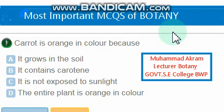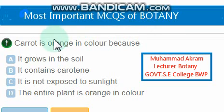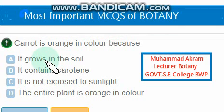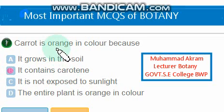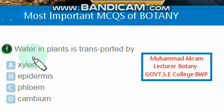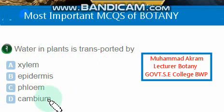Our first question: carrot is orange in color because it contains carotene. Yes, this is the right option. Carotene is present in carrot, which gives orange color to carrot.